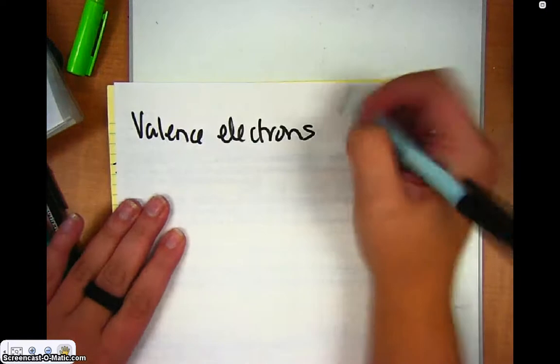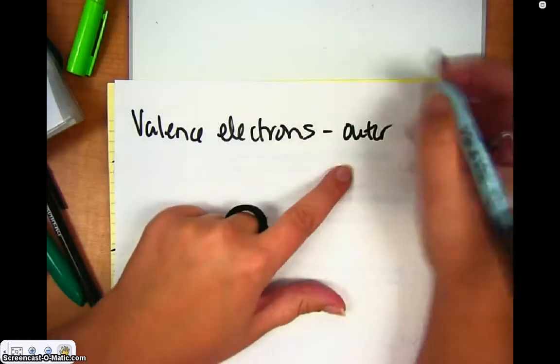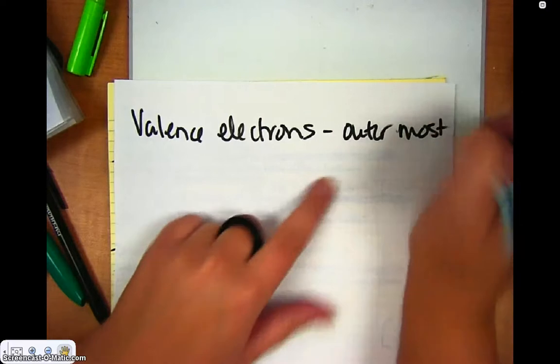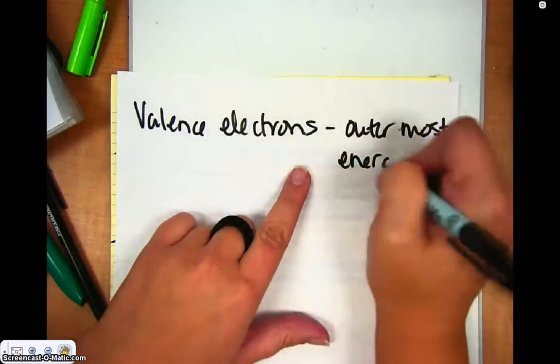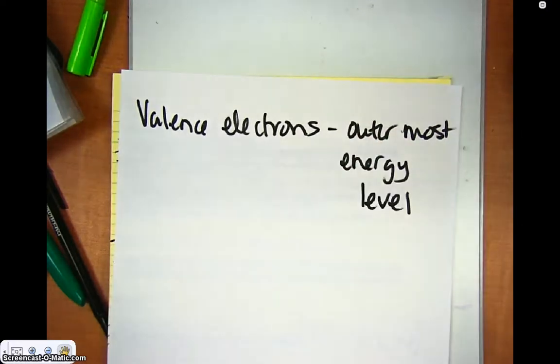And a valence electron are electrons in the outermost shell or outermost energy level. And the reason why these are important are these are the ones that are sort of on the edge of the atom. And they're the ones that are going to be involved in chemical interactions and sort of determine how an atom behaves.